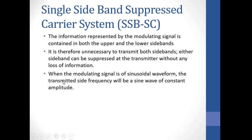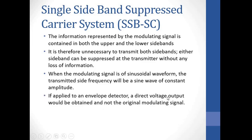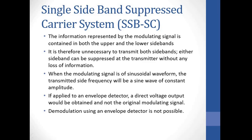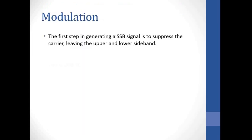For SSB-SC and DSB-SC, you cannot use a simple diode envelope detector — you need more complicated demodulation techniques. For modulation, you first generate a double sideband suppressed carrier and then remove the other sideband using a filter. A balanced modulator can be used, though the circuit details are beyond the scope of our syllabus.